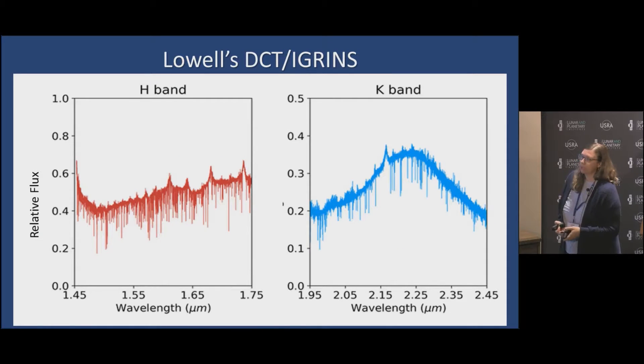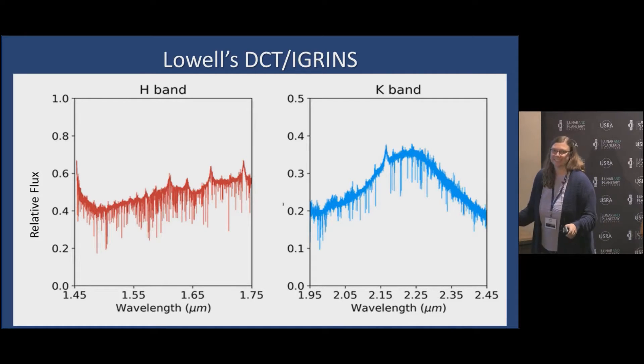I've also started using Lowell's Discovery Channel Telescope. It's a 4.3 meter telescope in Arizona, and this is hot off the presses. I literally got this data last week, so I have no analysis on it except to say that we can do the near infrared region from about 1.4 to 2.5 microns. I'm really excited to start. We can monitor it continuously. I can get a spectrum with this telescope and this instrument fairly quickly, so it's potentially a good way to monitor things that are happening. Unfortunately it's also a disc integrated spectrum, so there's limitations on what we can do with that.